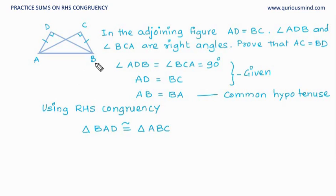And so using RHS congruency we can say that these two triangles are congruent. Triangle BAD is congruent with ABC. Now once we know that it is congruent, the remaining elements are also going to be equal. Why? Because we know that corresponding parts of congruent triangles are equal. And hence here we can see that BD is equal to AC. And hence proved.